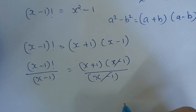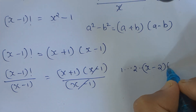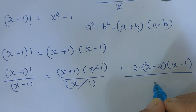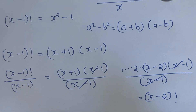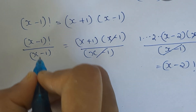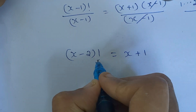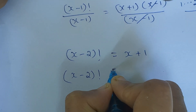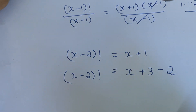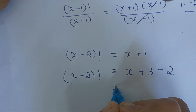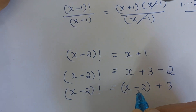The (x-1) terms cancel. And (x-1)! divided by (x-1) equals (x-2)!. So we get (x-2)! = x+1. Now, x+1 can be written as (x+3-2), which is (x-2) + 3. So (x-2)! = (x-2) + 3.